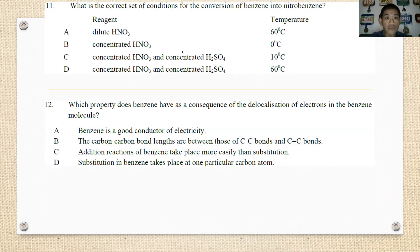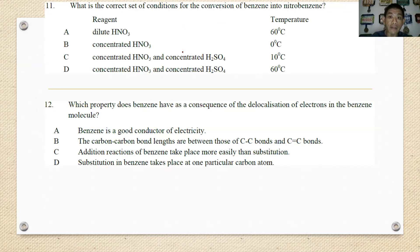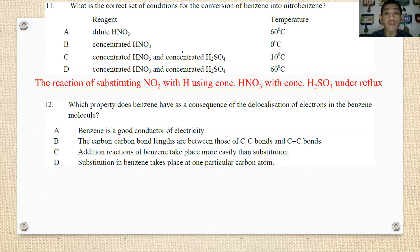Number eleven: which of the following is the correct condition for the formation of nitrobenzene? For this reaction you must use concentrated nitric acid together with concentrated sulfuric acid under reflux at 60 degrees Celsius. The best condition is D.